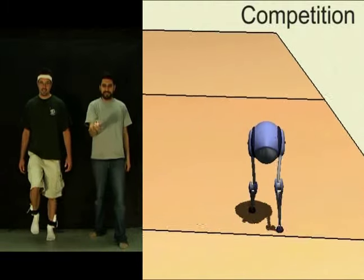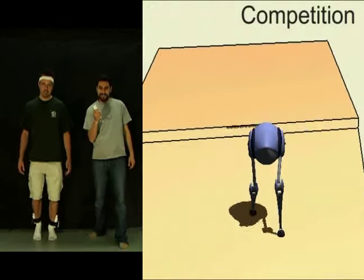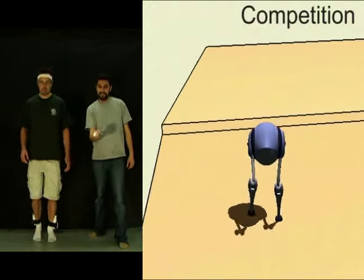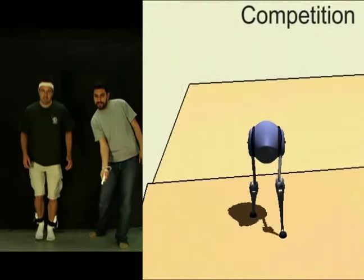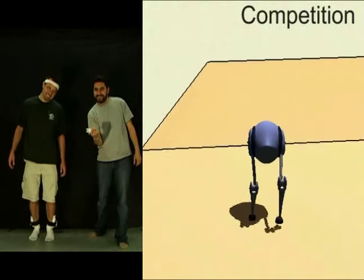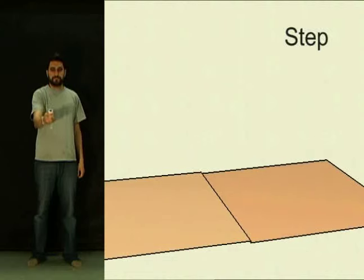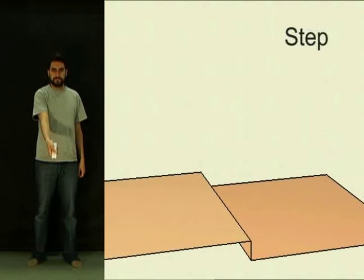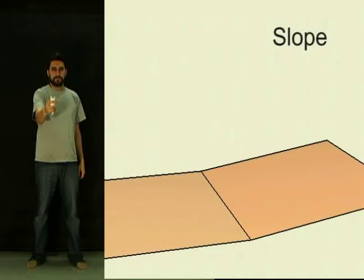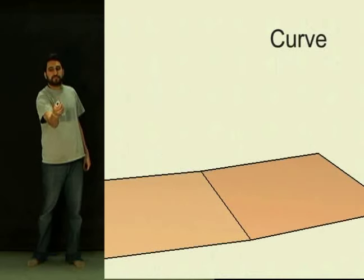In this competitive game, one user creates the terrain while the other user controls the character. The new terrain is generated in front of the character's current position. A step is created by pushing a button and inclining the Wiimote vertically. A slope is created by inclining the Wiimote vertically without pushing a button. The sharpness of the curve is changed by inclining the Wiimote sideways.